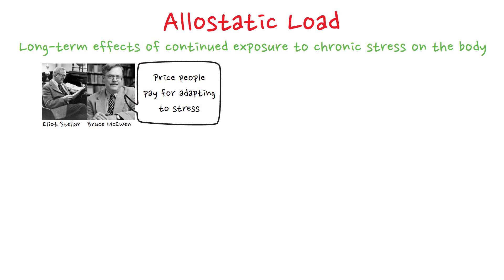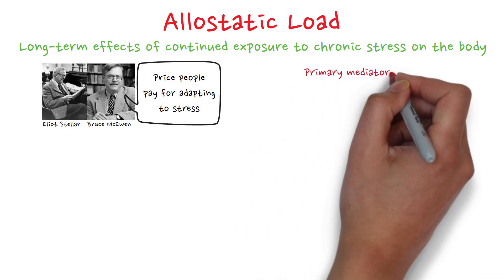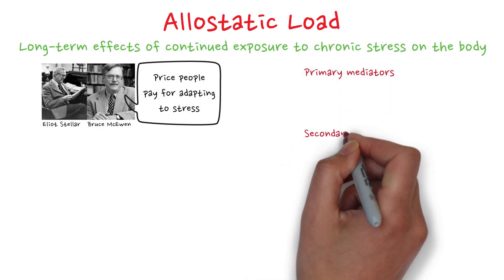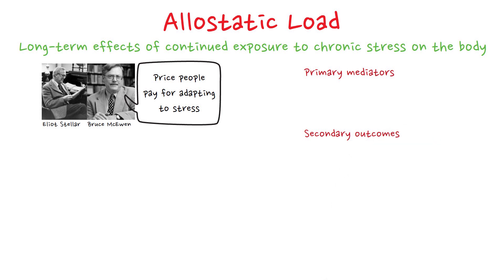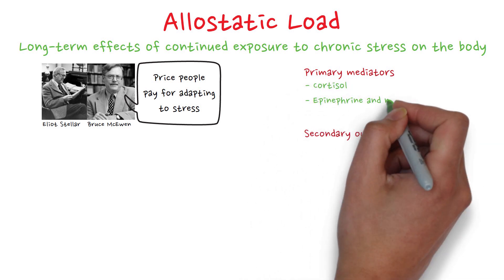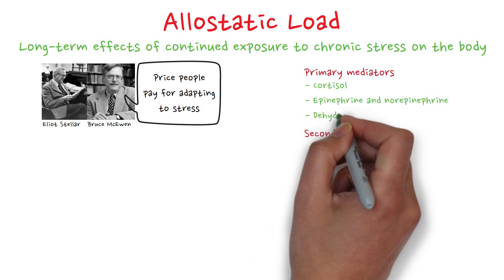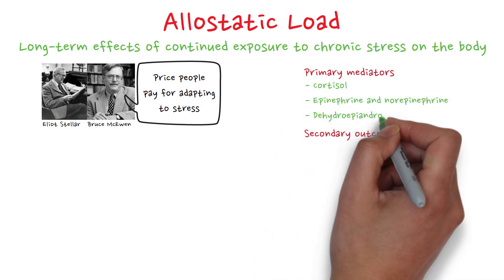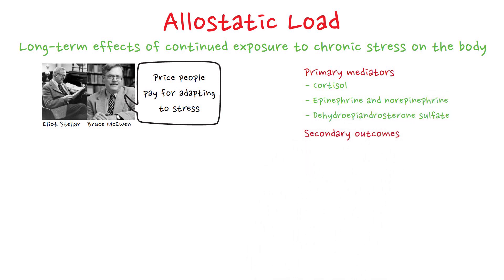Signs of Allostatic Load are divided into 10 markers, divided into primary mediators and secondary outcomes. The primary mediators are, for example, cortisol, epinephrine and norepinephrine, and dehydroepiandrosterone sulfate — a very hard word — which is the indicator of adrenal gland functioning.